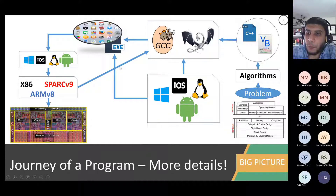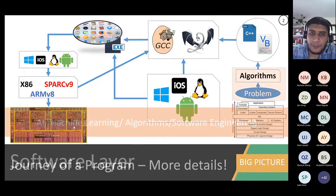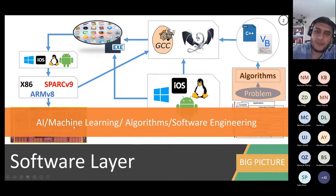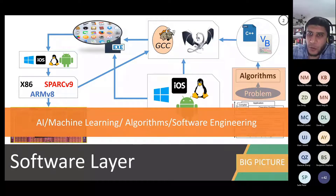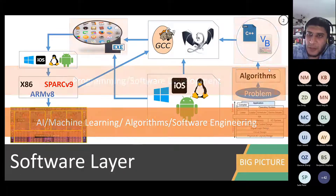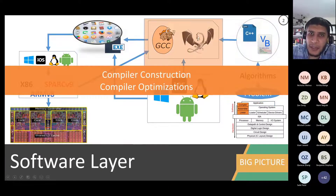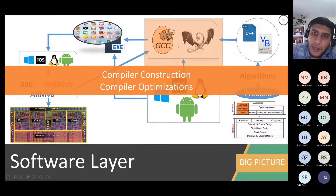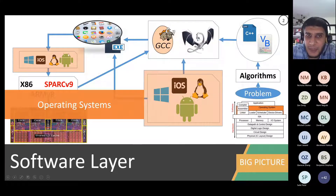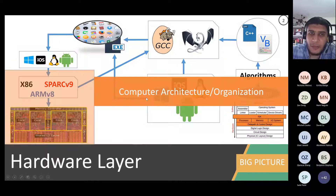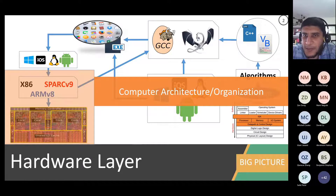Finally it's translated into machine code understood by the hardware. That's the full journey of any computing system. Each part of this is a course or multiple courses. Algorithms covers AI and machine learning; 2SH and 2SI cover programming; compiler construction and compiler optimization cover compilers; and then operating systems. Computer architecture and organization talks about the hardware — for example last semester's 4DM course.